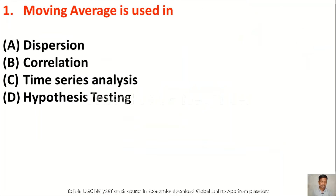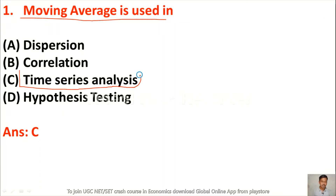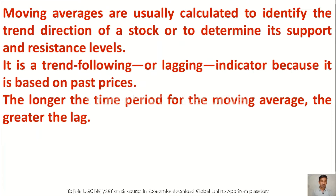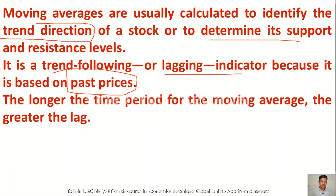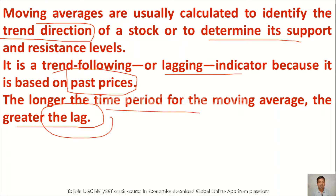Question 1: Moving average is used in — option A dispersion, option B correlation, option C time series analysis, option D hypothesis testing. Moving average is used in time series analysis, so option C is correct. Moving averages are usually calculated to identify the trend direction of a stock or to determine its support. It is a trend-following or lagging indicator because it is based on past prices. The longer the time period for the moving average, the greater the lag.